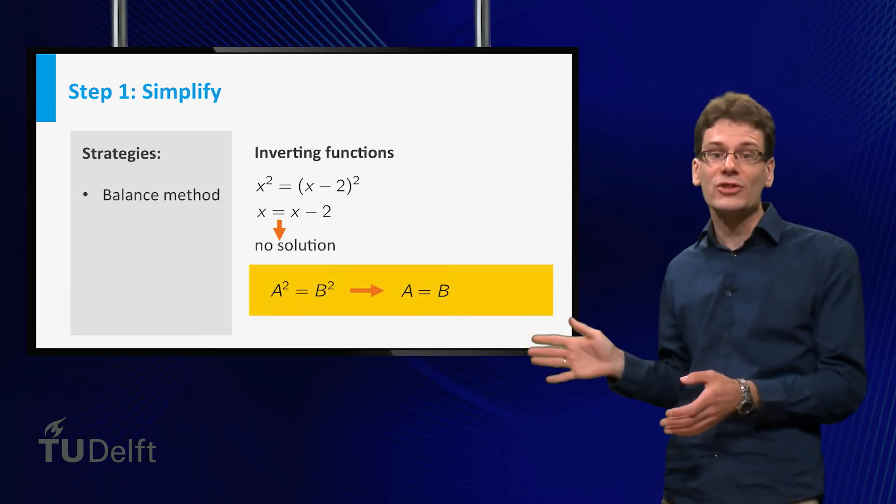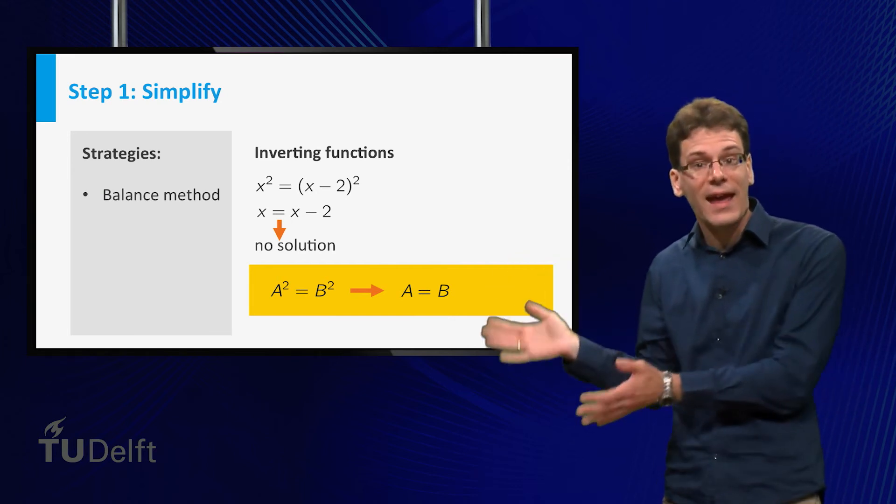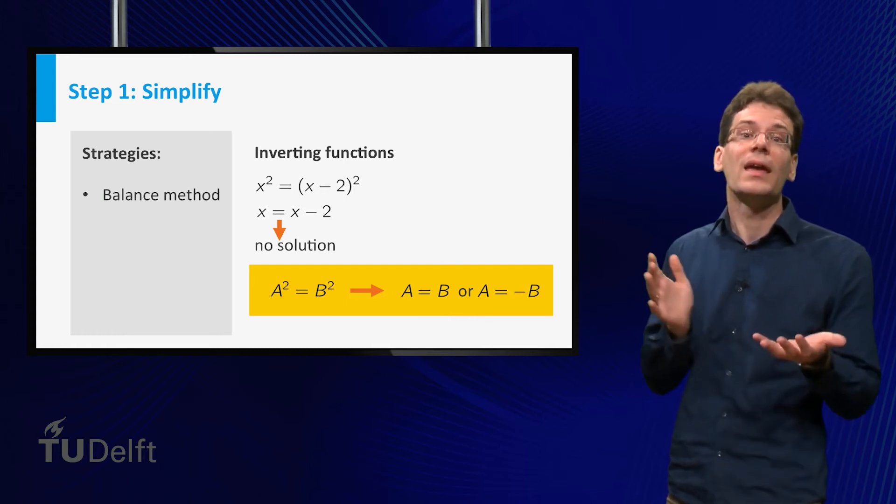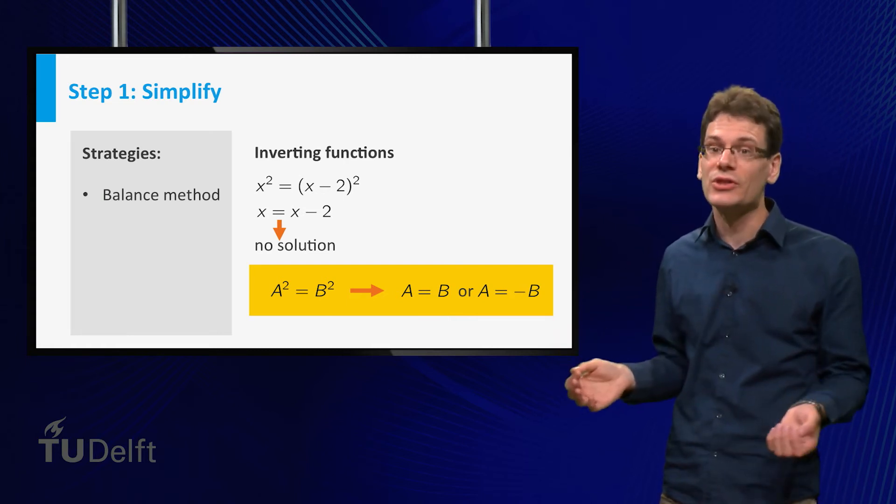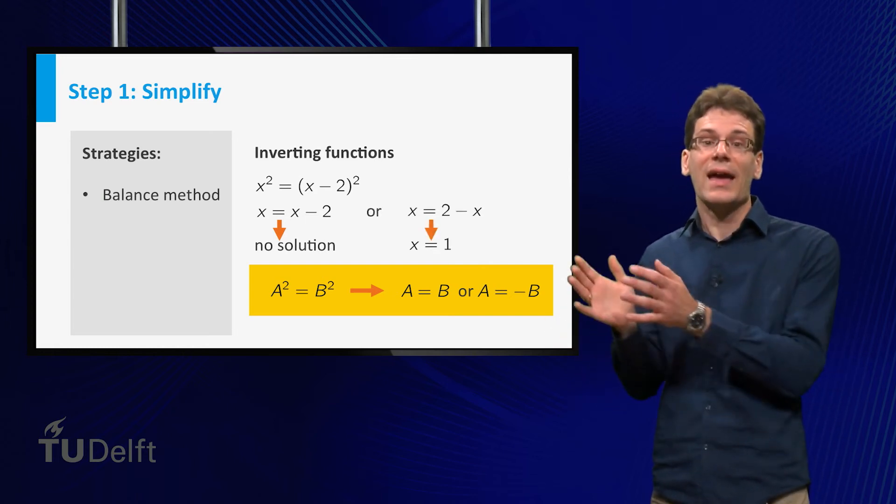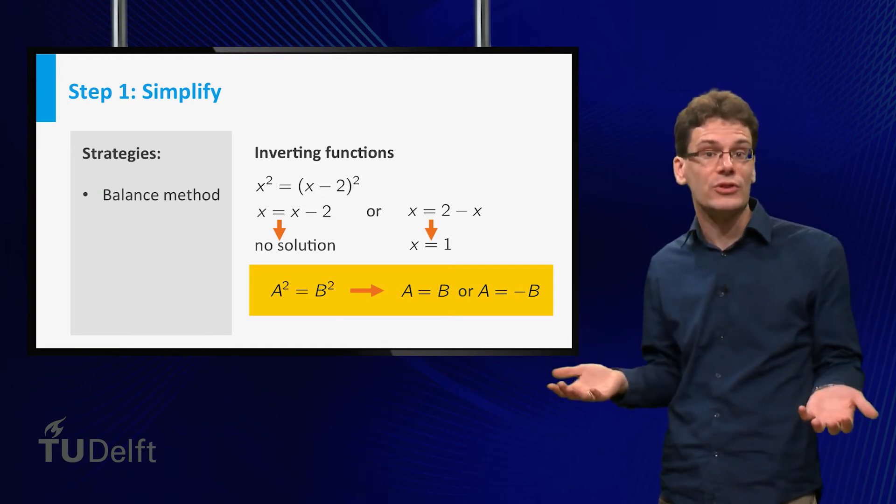In general, if a squared equal to b squared for some expressions a and b, then either a equal to b or a equal to minus b. If you forget the second, you may miss solutions. So in the example, we have to add the possibility x equal to 2 minus x, which indeed has x equal to 1 as a solution.